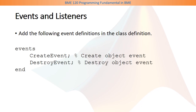Events must be defined at the source data object. This is done by adding the following event definitions in the class definition. There will be a section called Events, just the same as the section Properties or Methods. Inside this section, a list of event names will be listed. Here you can see there are two event names: CreateEvent and DestroyEvent.